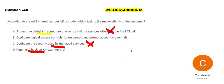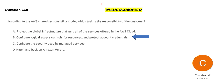Patching and backup of Amazon Aurora — Aurora is a database and it is a managed service from AWS. Anything which is managed means AWS manages it and you don't have access to control it. So the correct answer is option B: configure logical access controls for resources and protect account credentials.